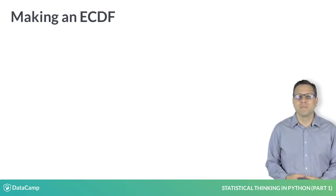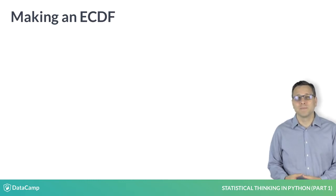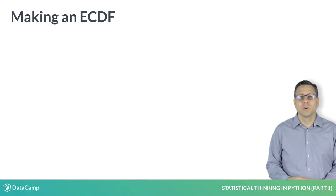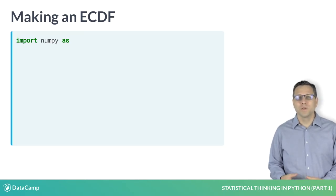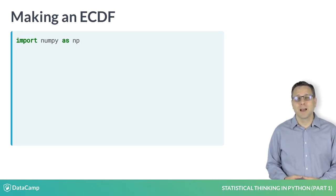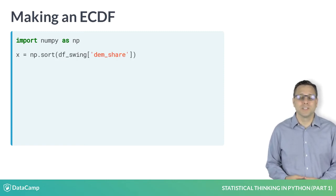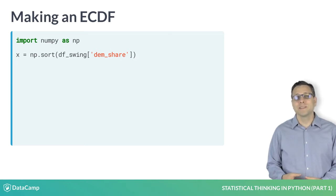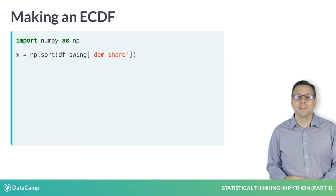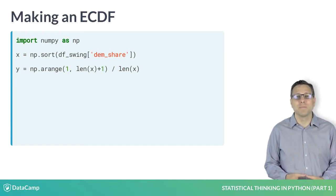Let's look at how to make one of these from our data. The X axis is the sorted data. We need to generate it using the numpy function sort, so we need to import numpy, which we do using the alias np as is commonly done. Then we can use np.sort to generate our X data. The Y axis is evenly spaced data points with a maximum of 1, which we can generate using the np.arange function, and then dividing by the total number of data points.